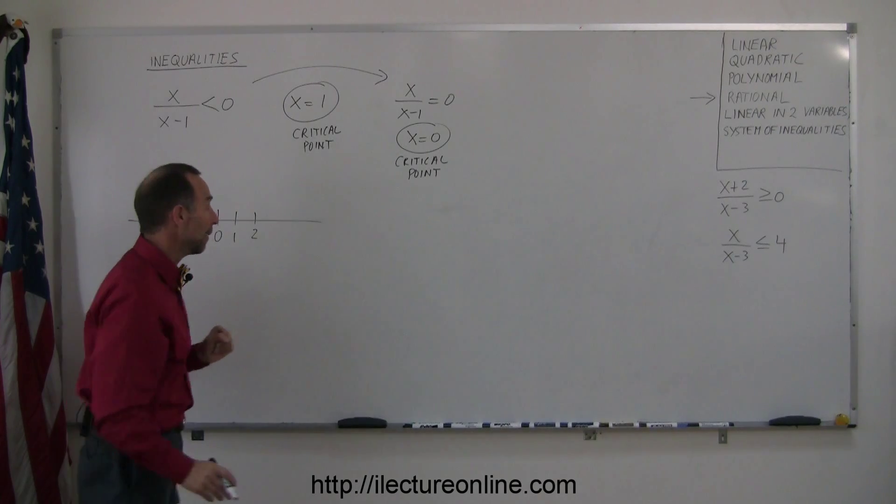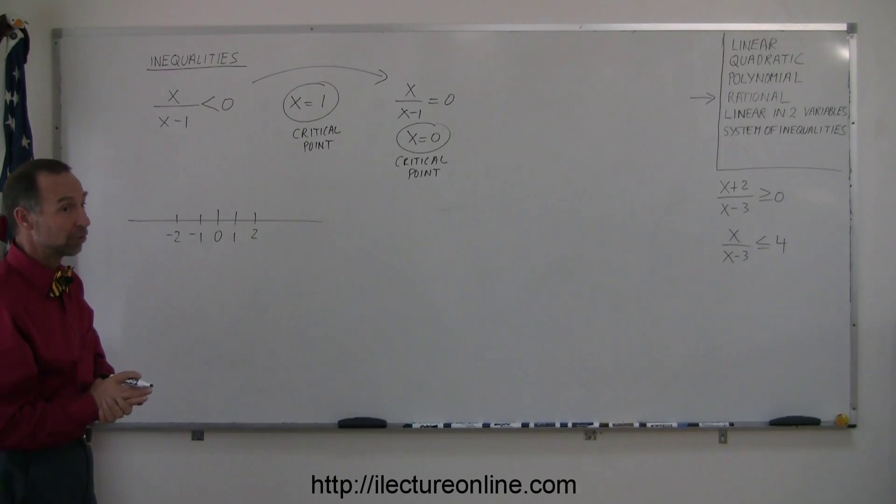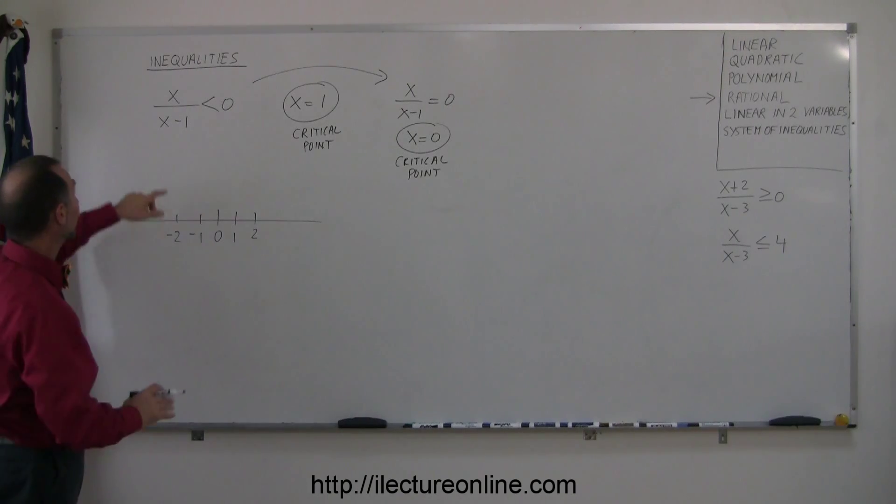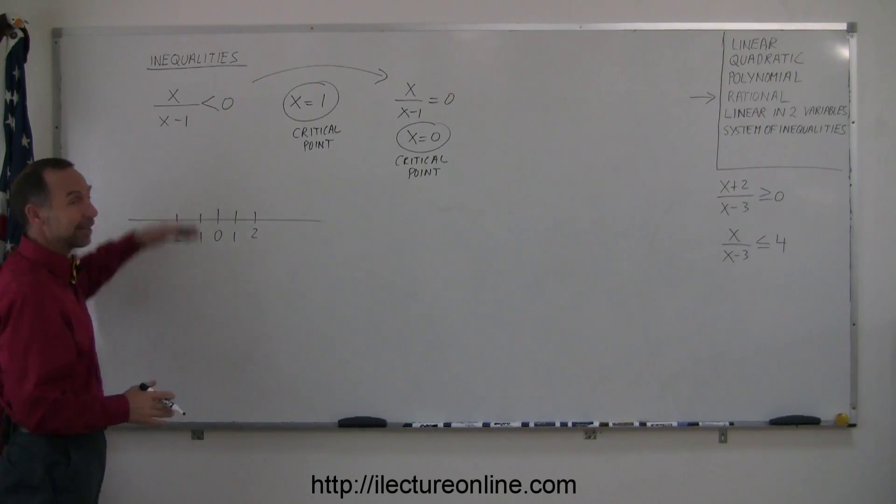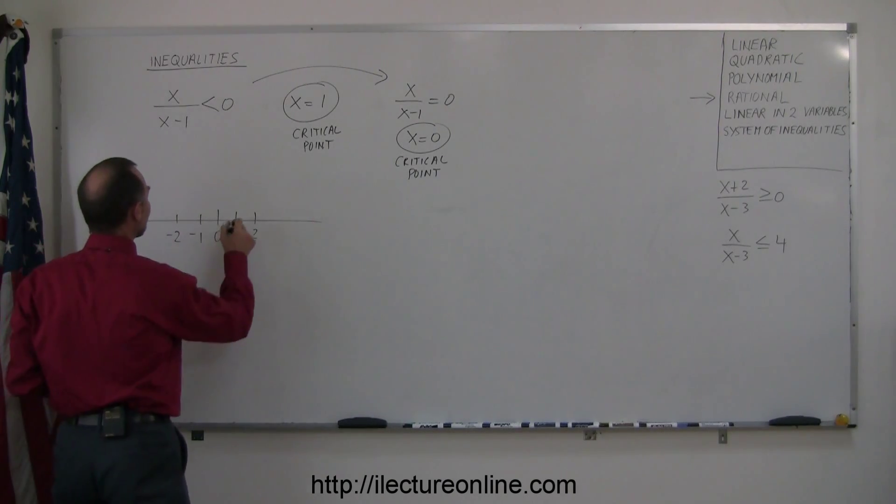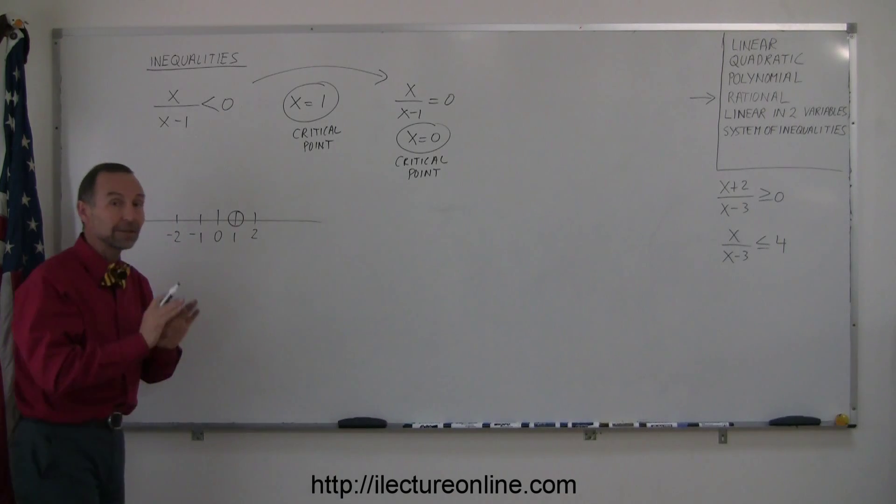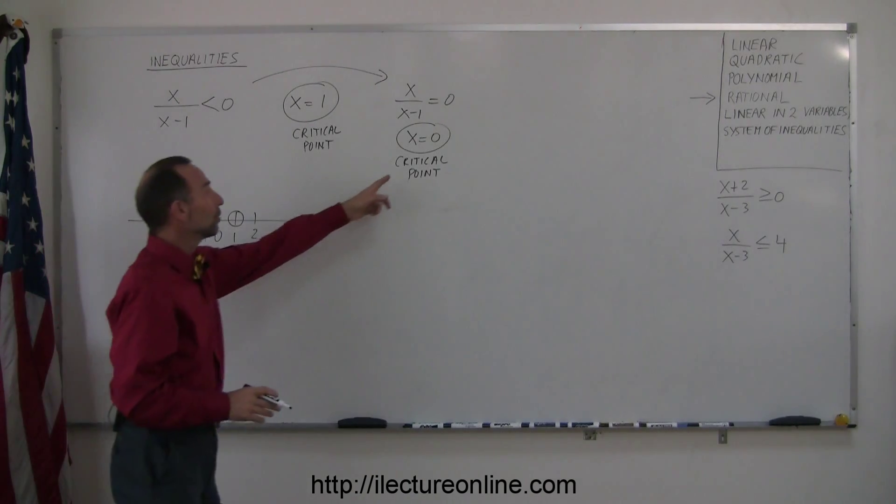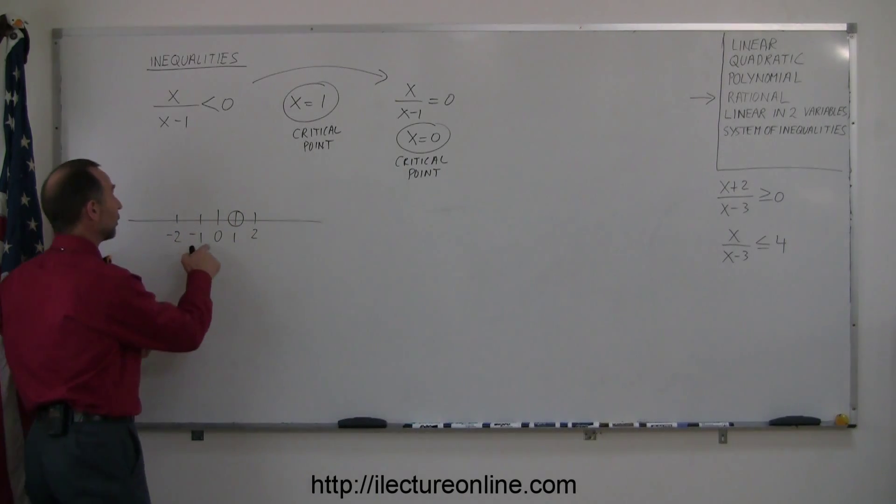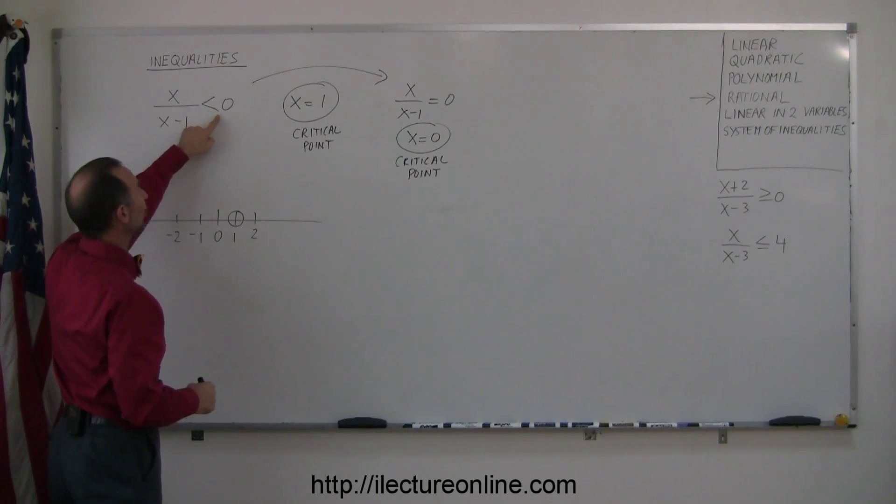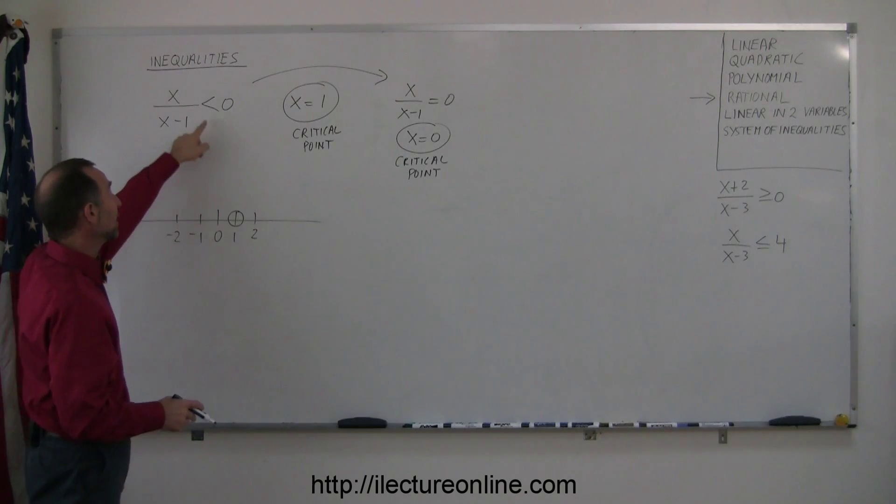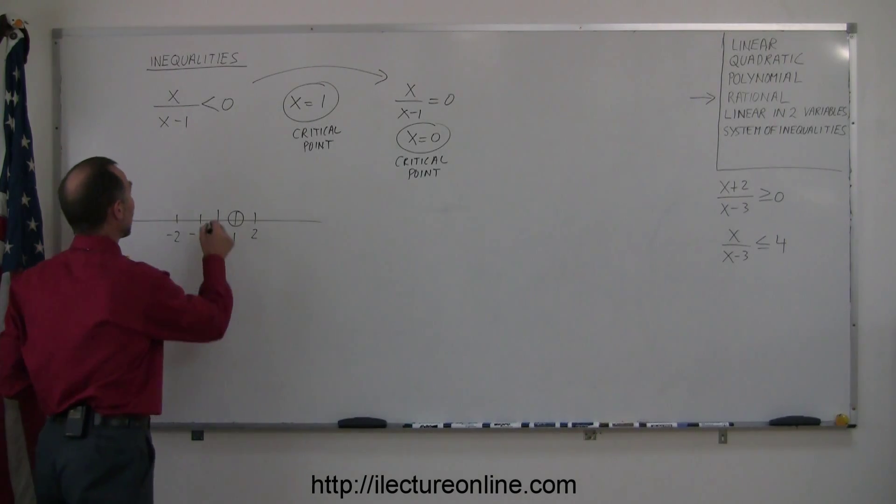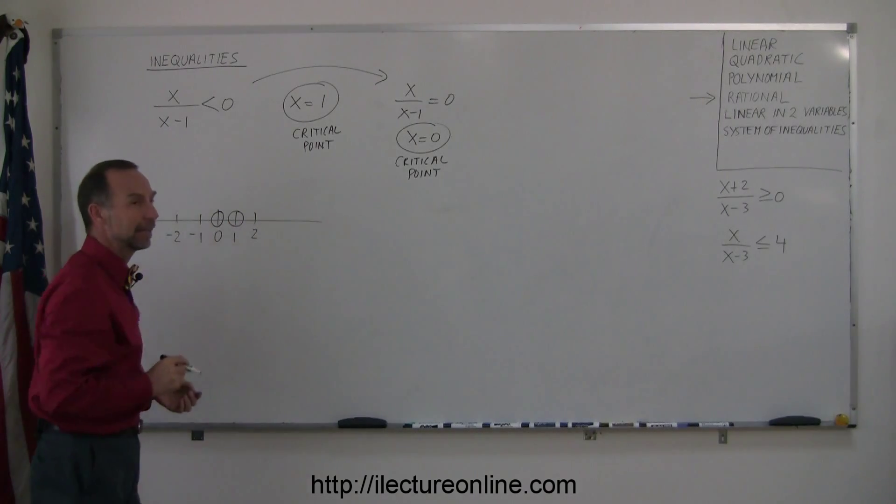So x equal 1 is a critical point. Now can x equal 1 be part of the solution? The answer is no. Why not? Because if x equals 1, I get a 0 in the denominator that makes that undefined. So x equal 1 cannot be a solution, but it is a critical point. It delineates the regions. So we draw an open circle indicating that 1 is not part of the solution. x equals 0. Is that part of the solution? Well, it's a critical point, and it's also not part of the solution because I don't have an equal sign there. If it said x is less than or equal to 0, then it would be part of the solution. But since the equal sign is not there, x equals 0 is also not part of the solution. So I have to draw an open circle there as well.